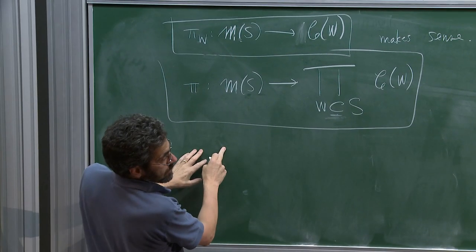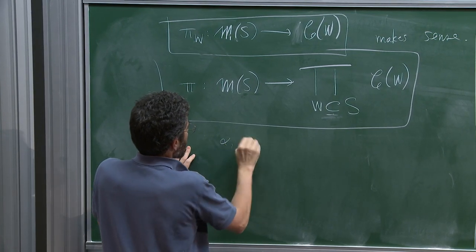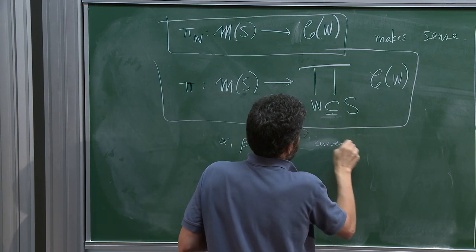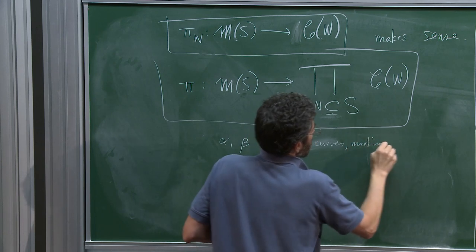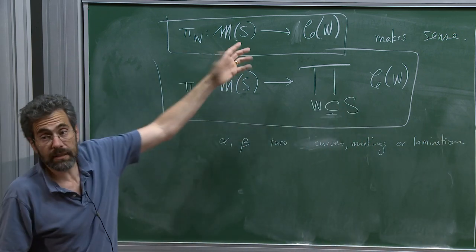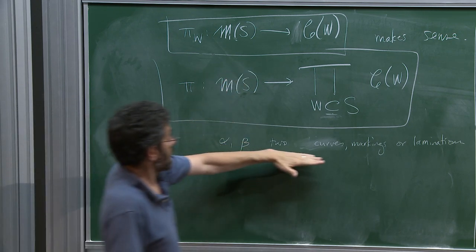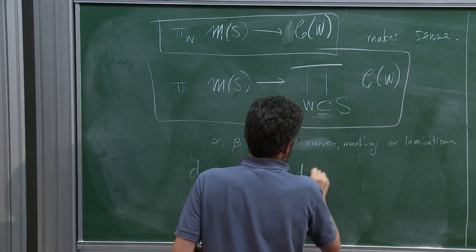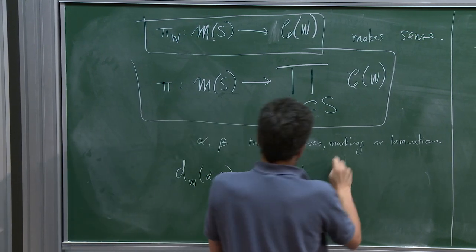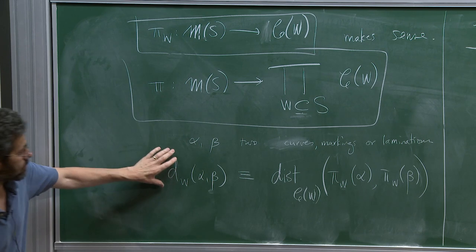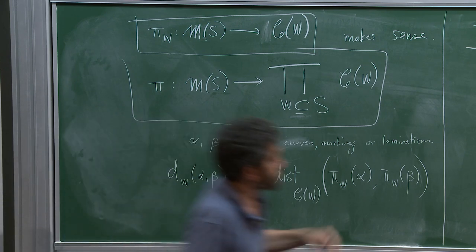When the surfaces intersect non-trivially, pi_W(boundary V) and pi_V(boundary W) both make sense — that's just a fact, because the boundaries have to meet each other's interiors. And I want a shorthand: if alpha and beta are two objects — curves, markings, or laminations (laminations also can be intersected with surfaces and I get arcs) — then d_W(alpha, beta) is shorthand for the distance in the curve complex of W of the projections of alpha and beta.